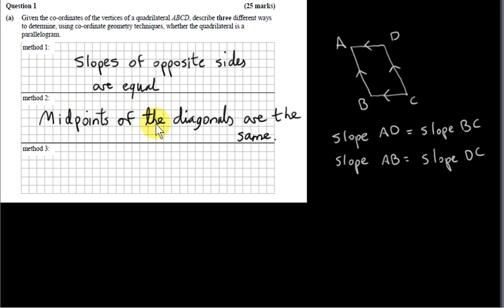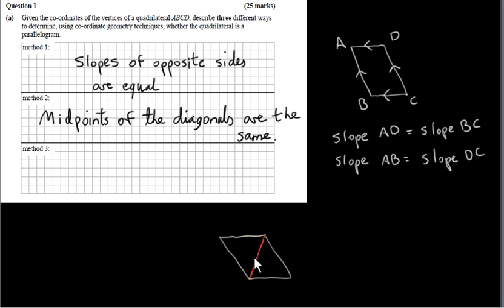A second method is to consider the midpoints of the diagonals of the quadrilateral. We draw the quadrilateral — it may or may not be a parallelogram — and take one diagonal and find its midpoint. Then we look at the other diagonal. If both diagonals share the same midpoint, then the quadrilateral is a parallelogram.